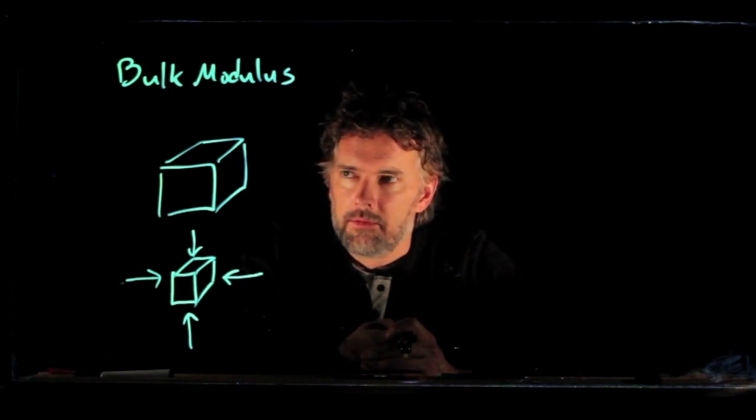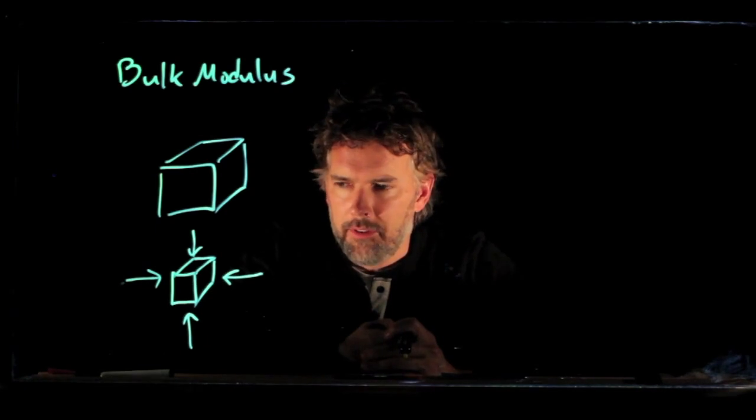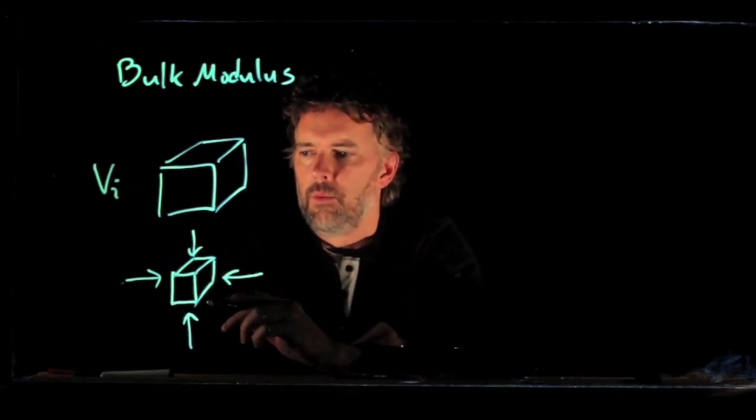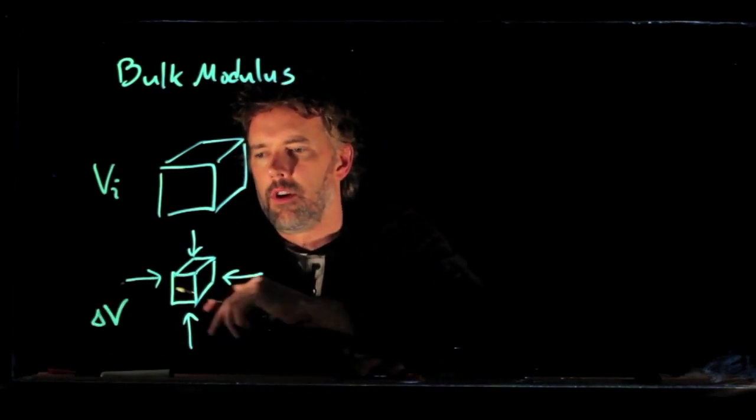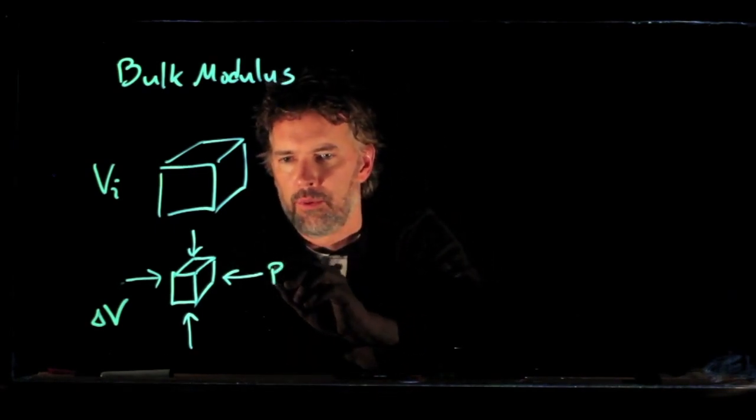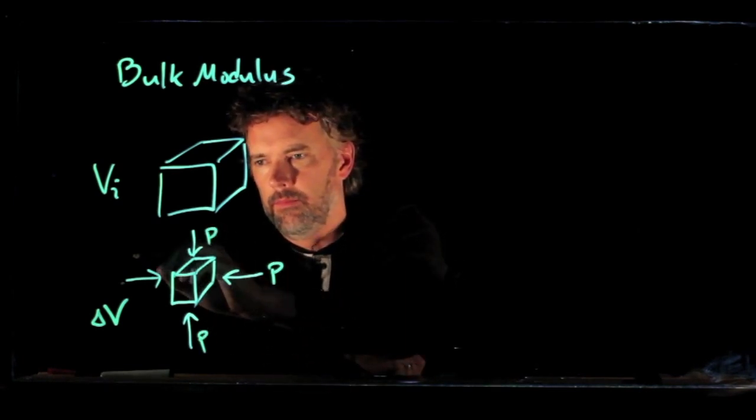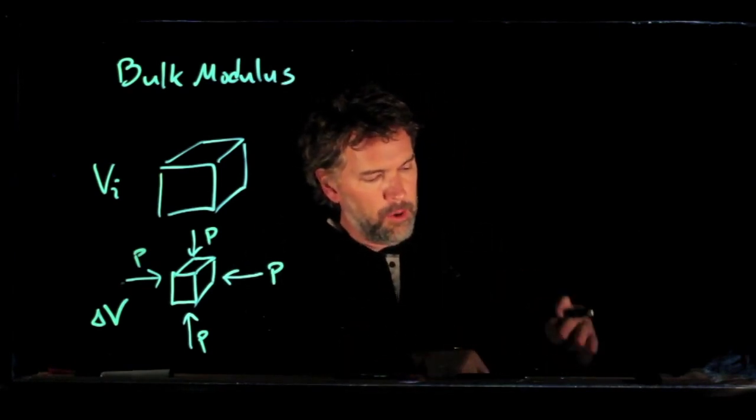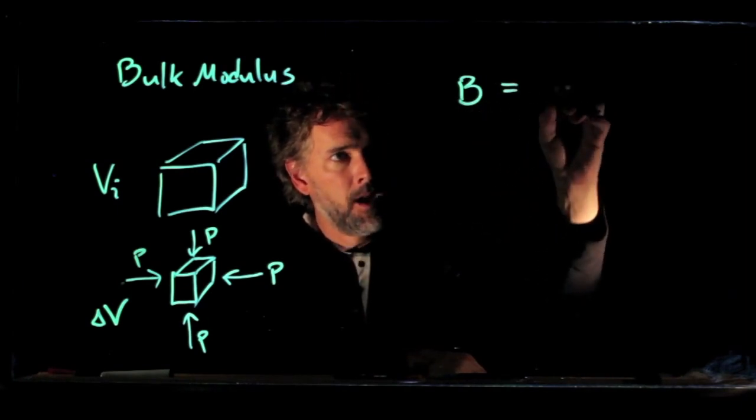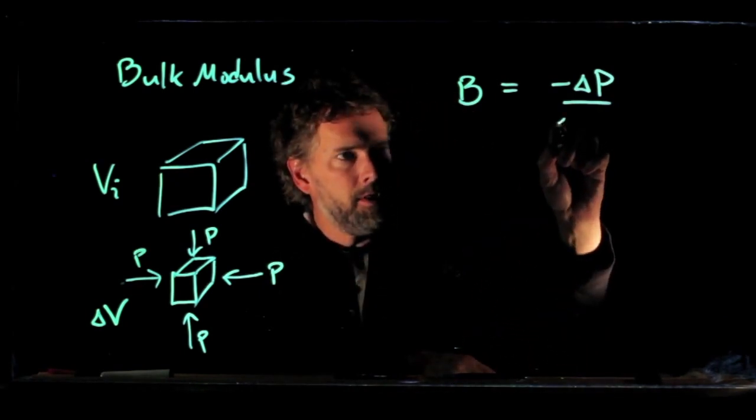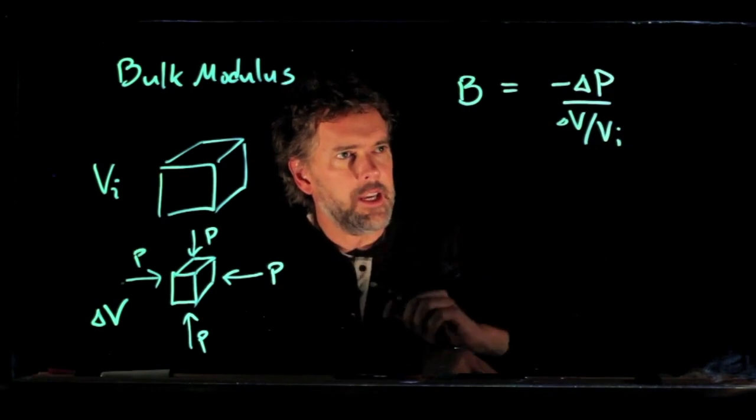So how do we deal with this? Well the first thing that we need to identify is what is the initial volume and what is the new change in volume, and that change in volume is of course due to the pressure from all sides on that box. All right, so what is the bulk modulus? The bulk modulus is defined as the following: B = -ΔP/(ΔV/Vi).